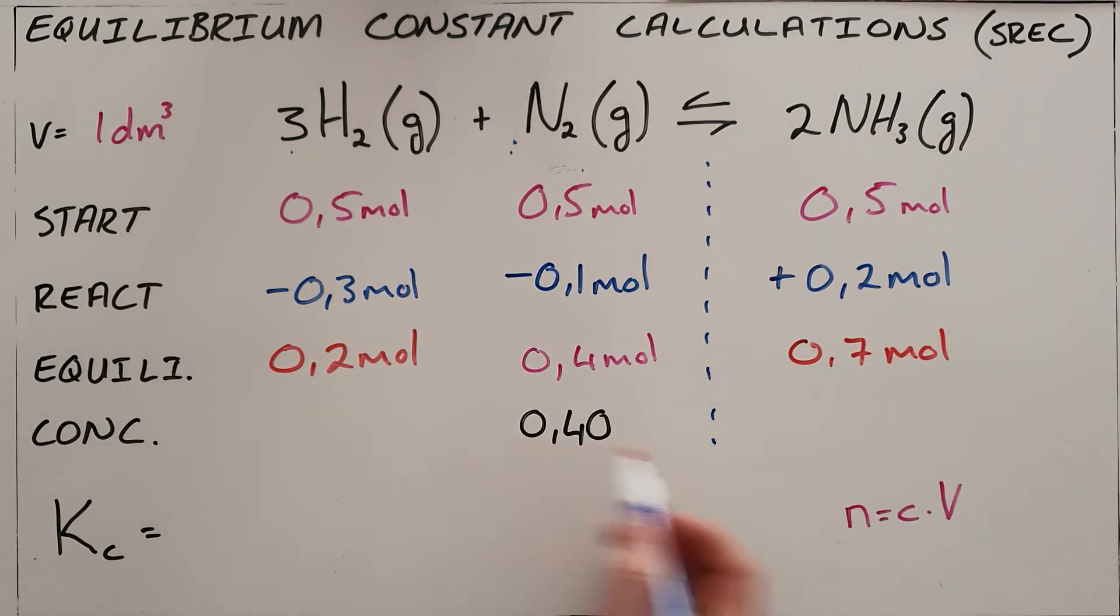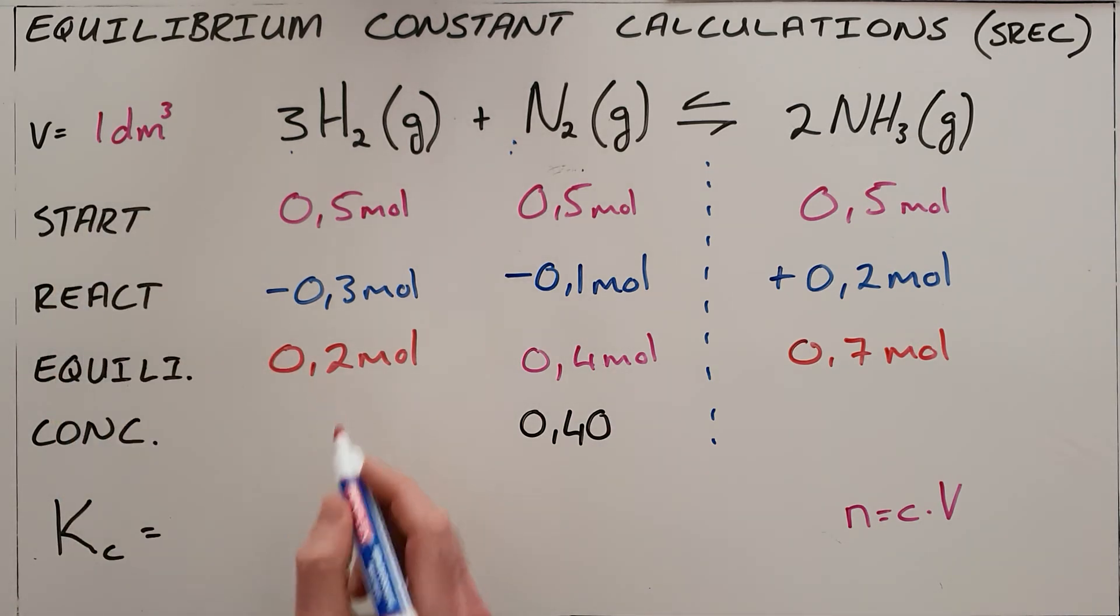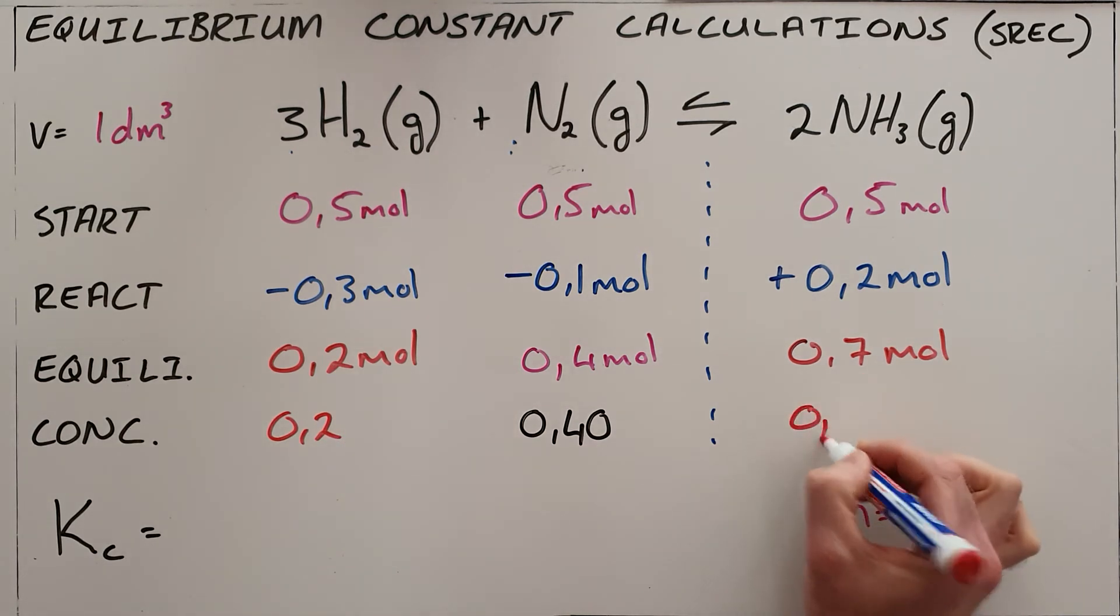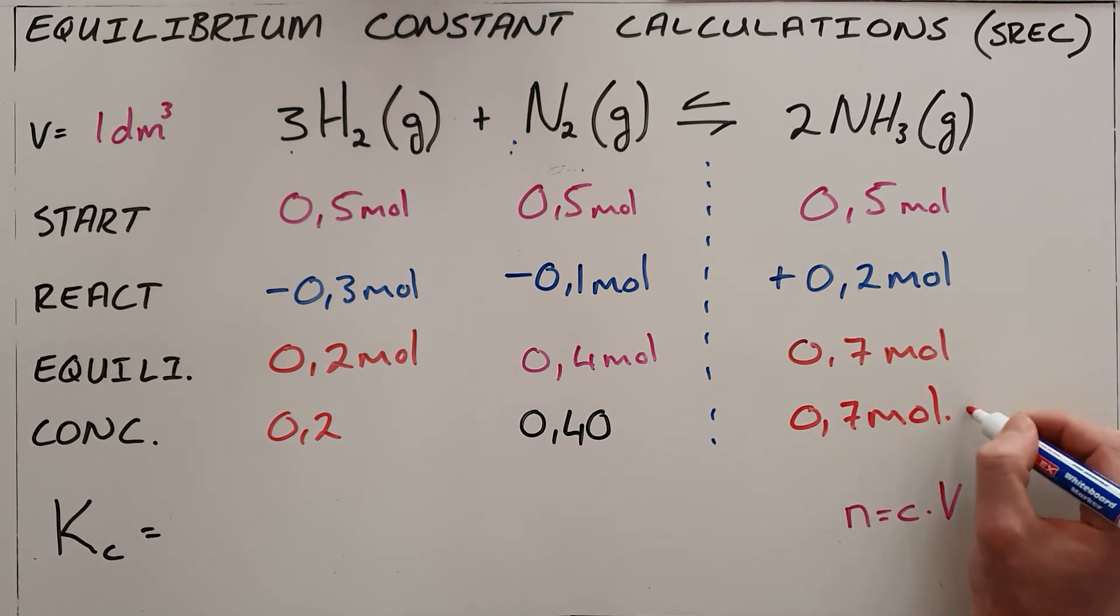Again, these can easily be converted into concentrations because our volume is 1, which means that this is a 0.2 mole per cubic decimeter concentration and this is a 0.7 mole per cubic decimeter concentration.